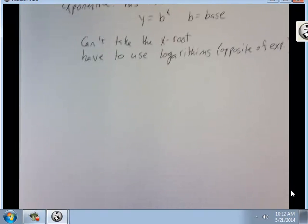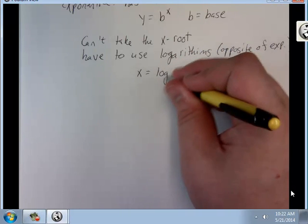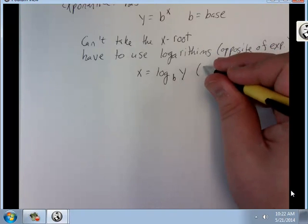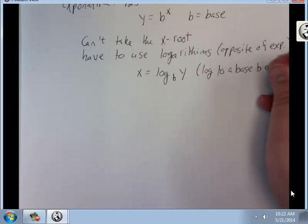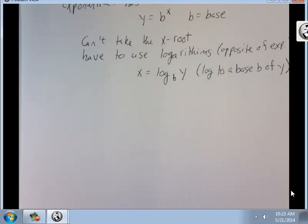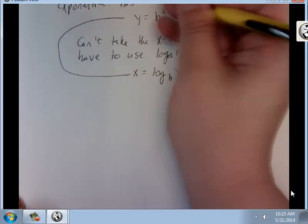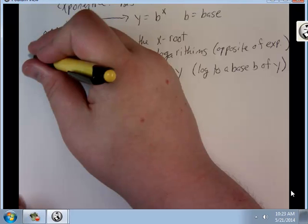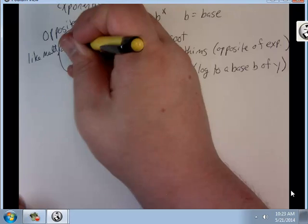A logarithm looks like this: x equals log to a base b of y. That's just how you read it. They're opposites just like multiplication and division.